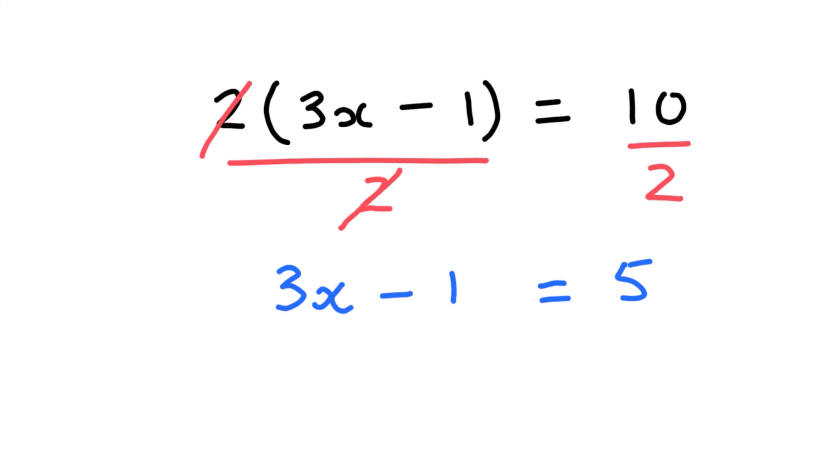So now we just have a two-step equation. And we can work from there instead of doing distribution. Adding 1 to both sides. These will cancel. I have 3x is equal to 5 plus 1 is 6.